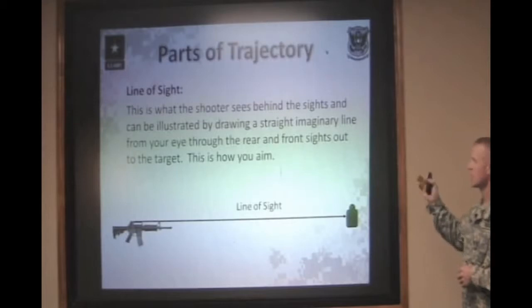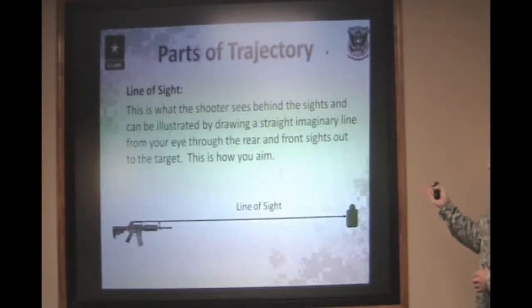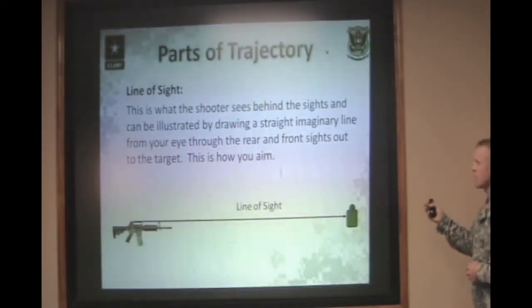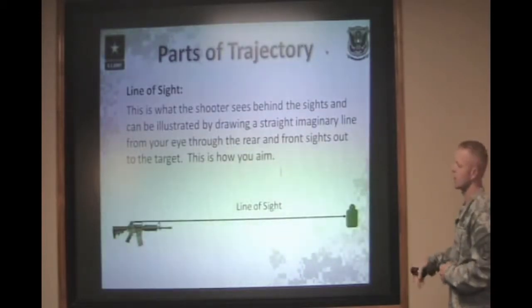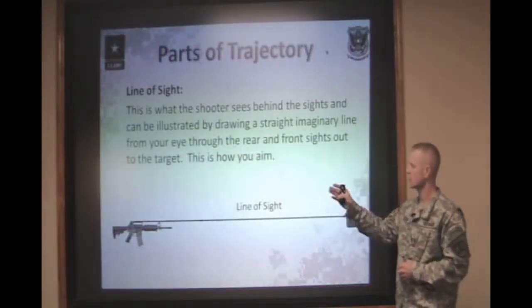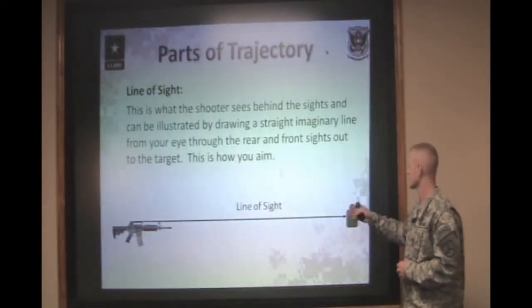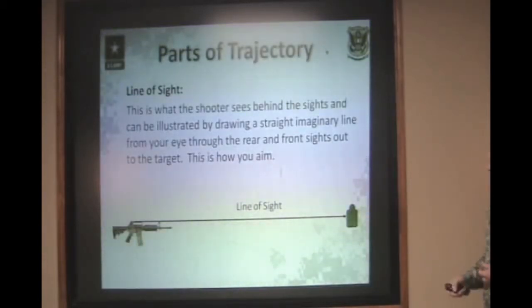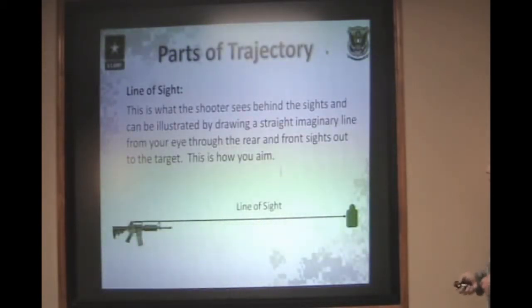Now we discuss line of sight. What a shooter sees behind the sights can be illustrated by drawing a straight line from the rear sight to the front sight to the target. This is nothing more than your line of sight — what you're going to see through the sights.